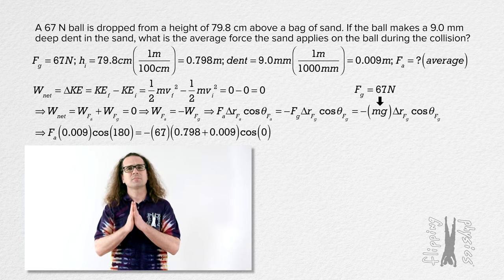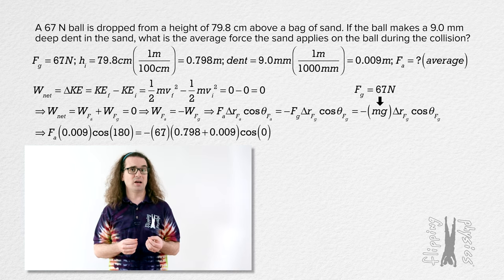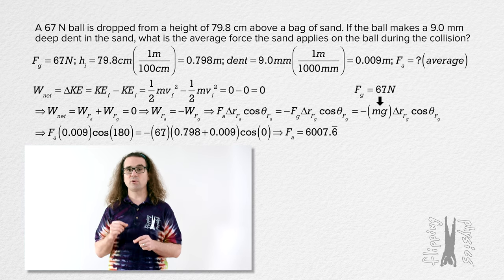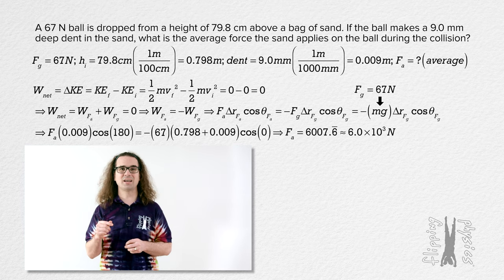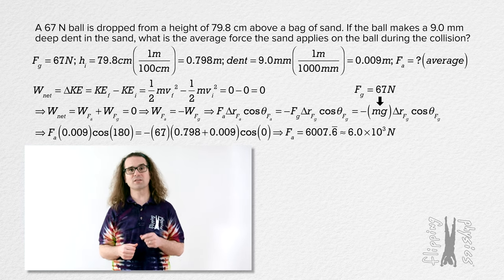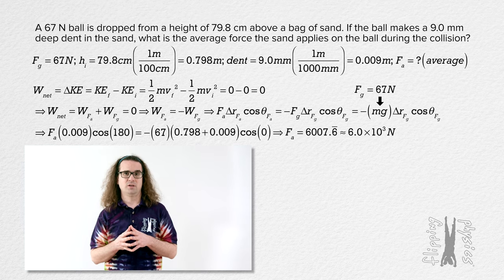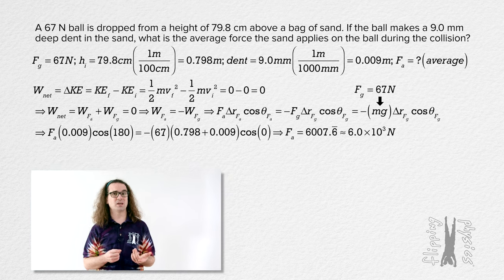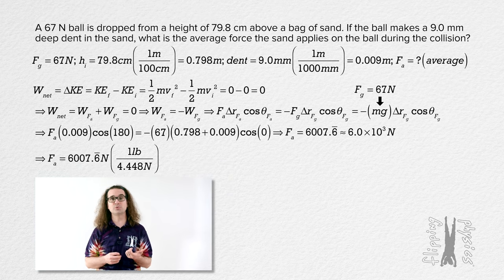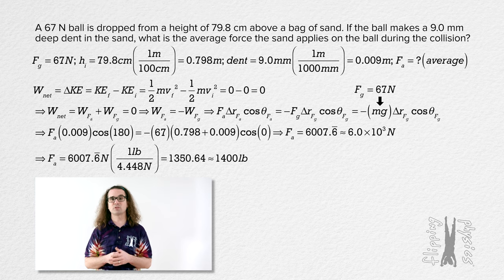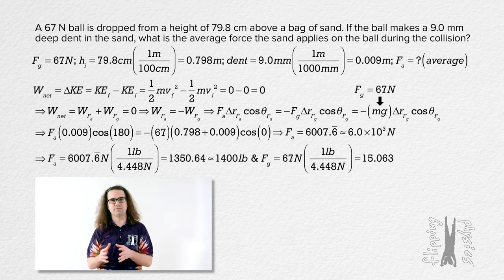Very nice corrections. That means our average force applied works out to be 6,007.6 repeating, or 6.0 times 10 to the third newtons with two significant figures — roughly 6,000 newtons. For those of you who traditionally work in English units, because there are 4.448 newtons per pound, that works out to be roughly 1,400 pounds of force applied on average acting on this 67 newton, or roughly 15 pound, ball as it makes this 9 mm dent in the sand.